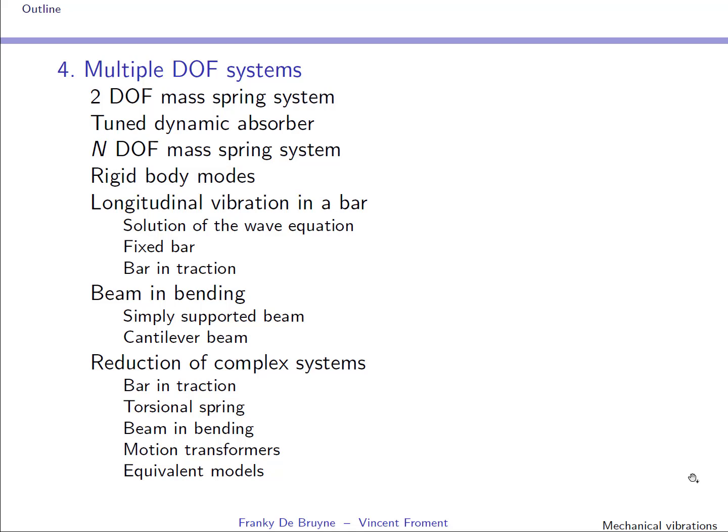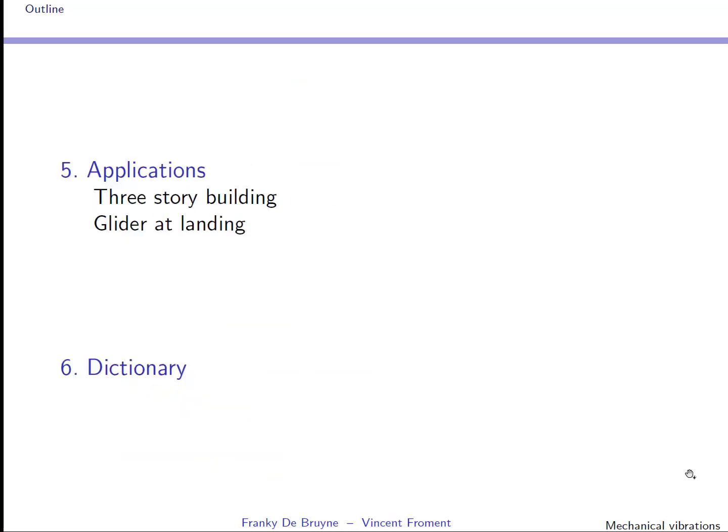We consider two cases: first longitudinal vibration in a bar, and then a beam in bending. Very often the system is complex, but we can work with reduced complexity systems. Section 5 is about applications. The first application is a building subjected to wind or an earthquake, and we compute the eigenfrequency and eigenmodes. The second application is a glider that is landing, and again the eigenfrequencies and eigenmodes are computed. There are very few examples, and I'm counting on you — I hope that in next year's version of the course there will be a lot more applications.